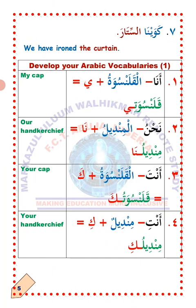Thalatha, number three — Anta, you. So how do we change the word al-kolansuwa to suit Anta so as to indicate ownership? Step one: you detach aleph and lam. Step two: you attach kafun carrying fataha to the last letter. Al-kolansuwa will now become kolansuwa toka, which means 'your cup.'